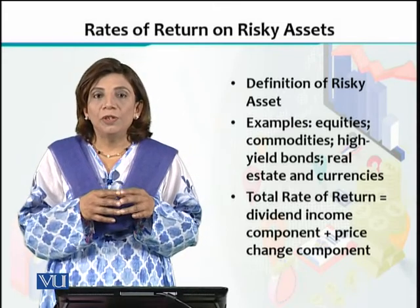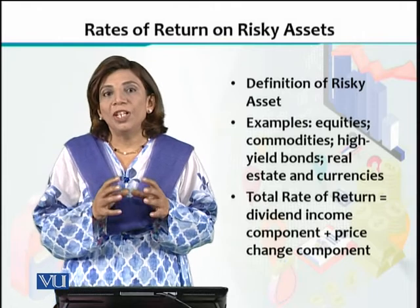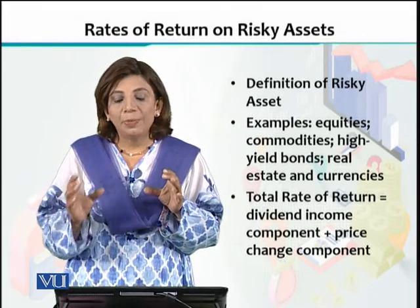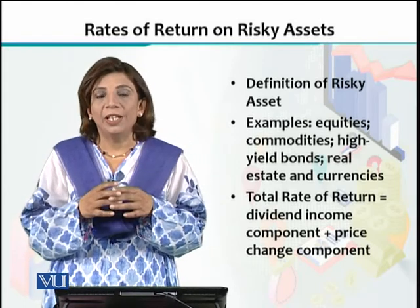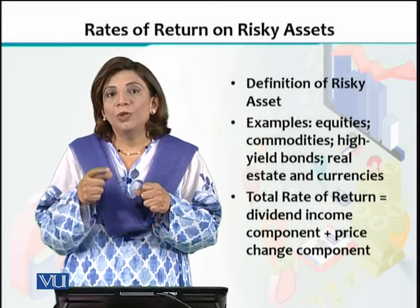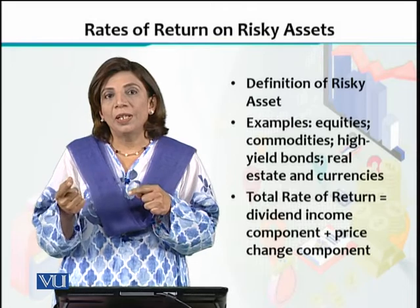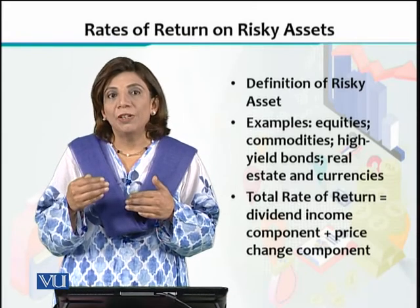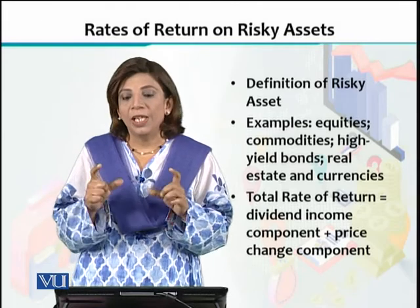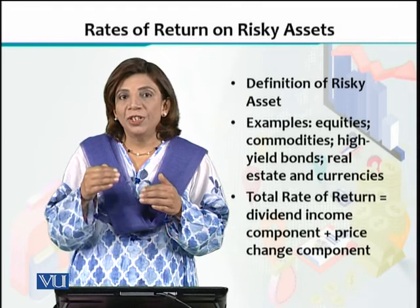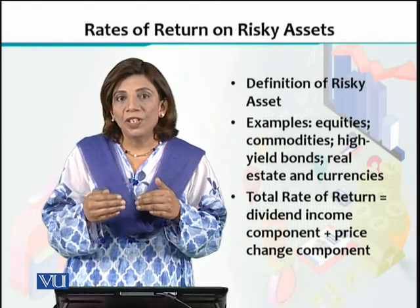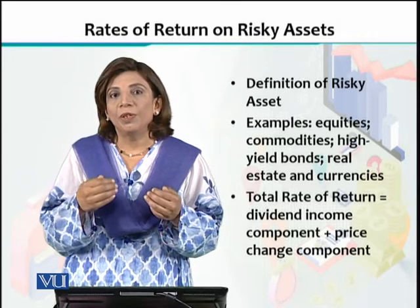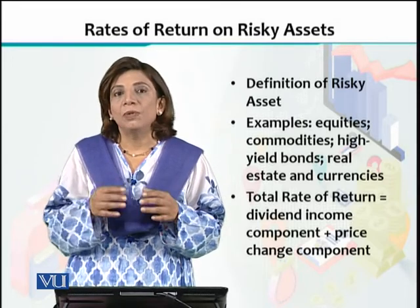When we talk about the rate of return, it is basically a combination of two types of incomes: the dividend income component and the price change component. For example, if you buy a stock at Rs. 100 and one year later the price due to demand and supply interaction becomes Rs. 105, that is called the price change component. But if you hold a stock and the company has profits, then you will get some part of the dividend. Dividend is the return which the company announces, sharing profits with stockholders and shareholders.